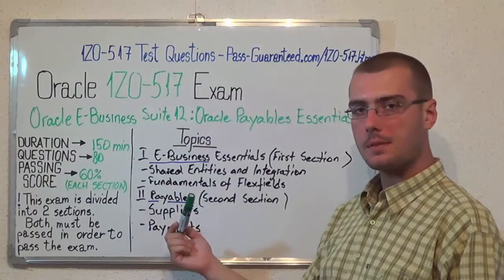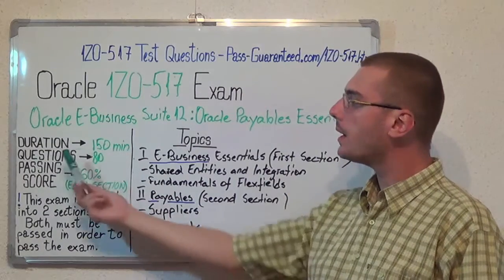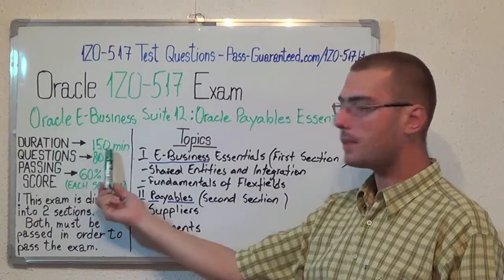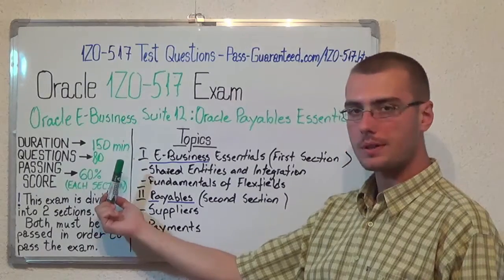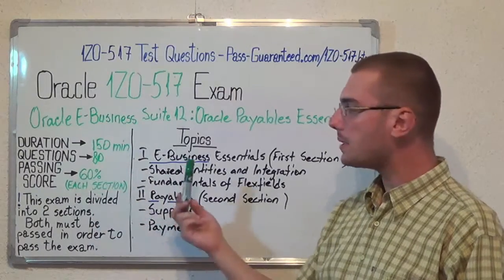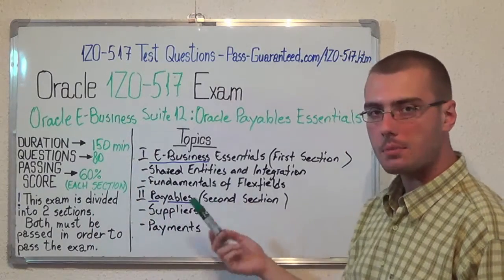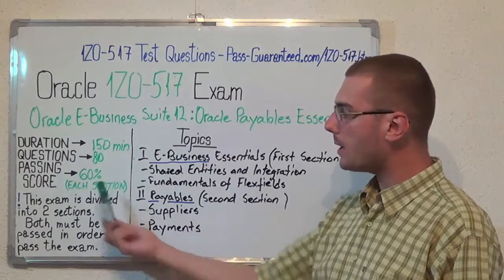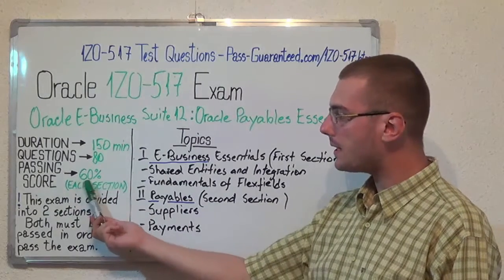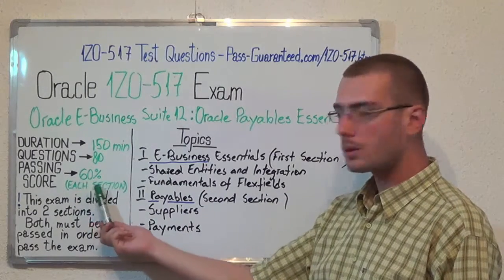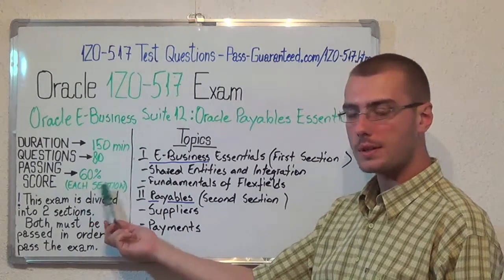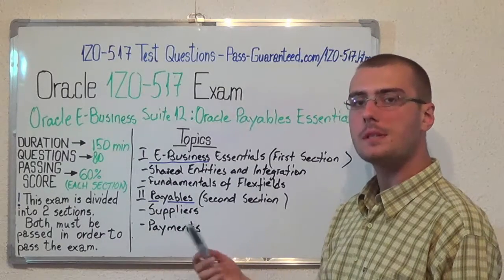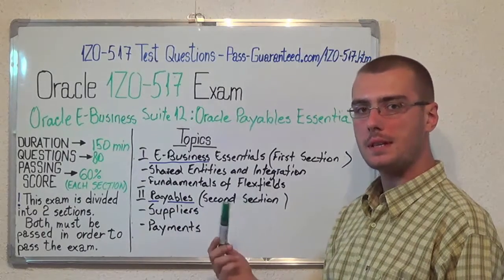Here you have some basic test information. The duration of this exam is 150 minutes and there are 80 questions. Please note that this exam is divided into two sections, each one making up 60% of the total amount of questions. Furthermore, both sections must be passed in order to pass the exam.